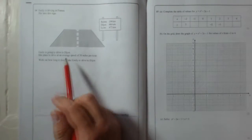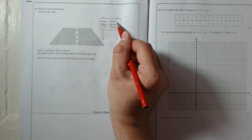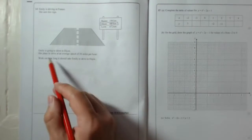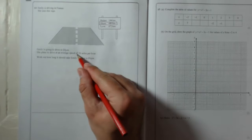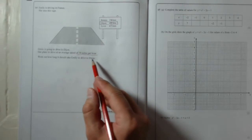There's the sign. Emily is going to drive to Dijon. That's the second one. She plans to drive at an average speed of 50 miles per hour. Work out how long it should take Emily to drive to Dijon.